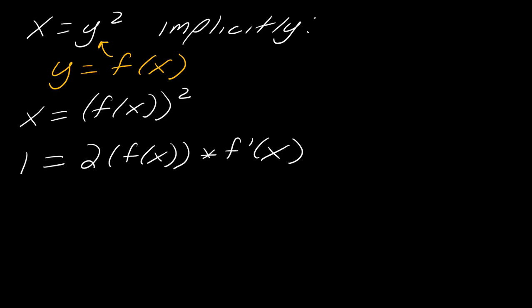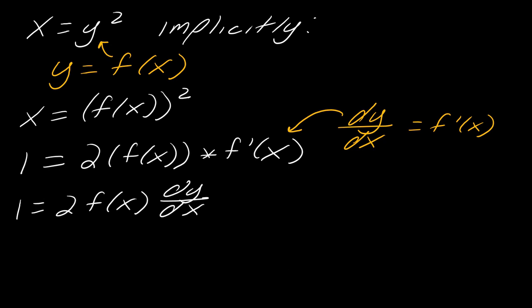Now, one other way that we tend to write f prime of x, an alternative notation for this is dy dx. That is the same thing as f prime of x. So I'm actually going to replace that here. So I have 1 equals 2 times f of x times dy dx. And apologies if you can hear my dog barking in the background.